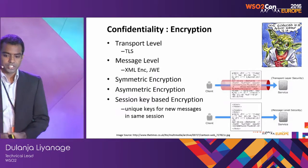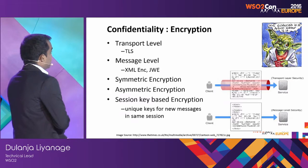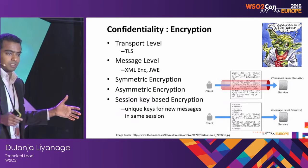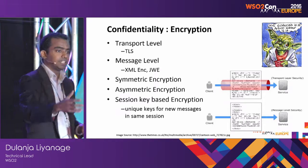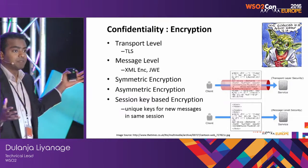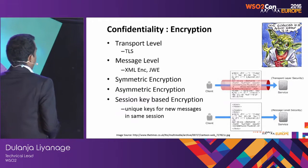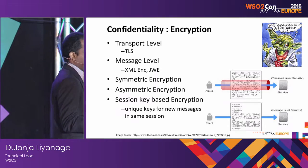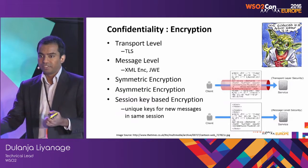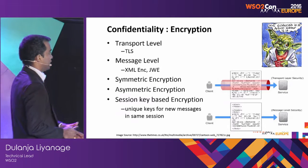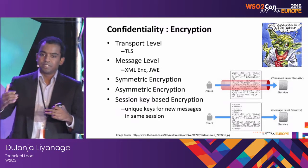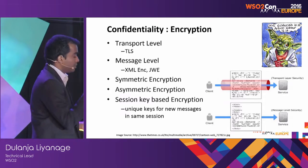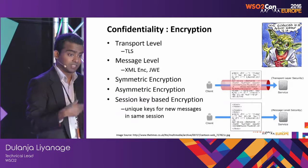Now coming to confidentiality, which is maintained by encryption. You can use these mechanisms at the transport level or message level. We have symmetric encryption, meaning using the same key on both sides; asymmetric encryption, which uses PKI — a public key infrastructure with a private key and a public key; and session-key-based encryption, where unique keys are generated for each message within an established session. After asymmetric encryption establishes the session, a symmetric key can be used for communication, since asymmetric encryption is quite performance-heavy.